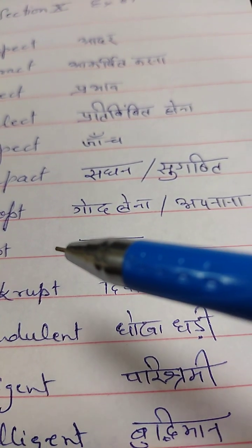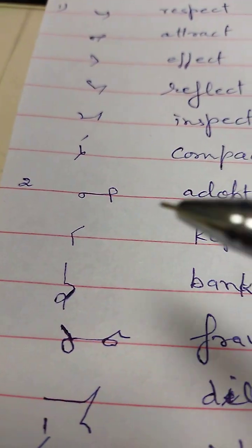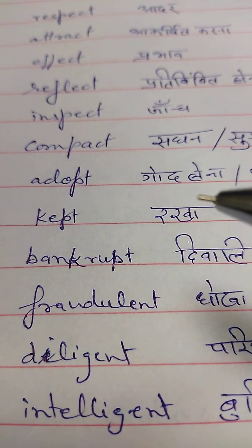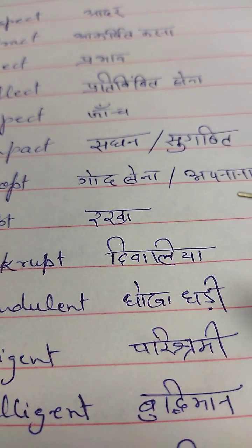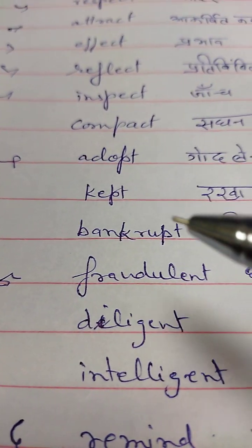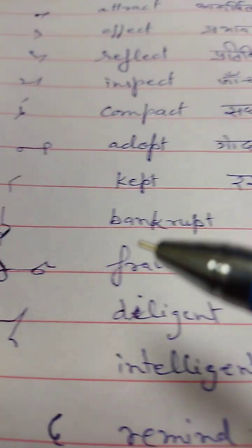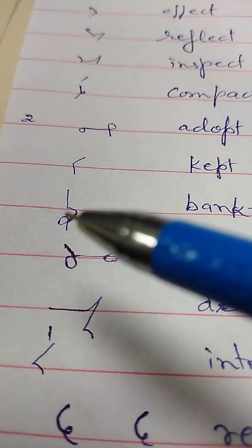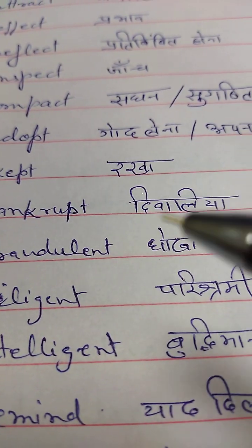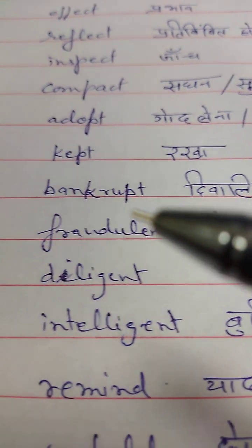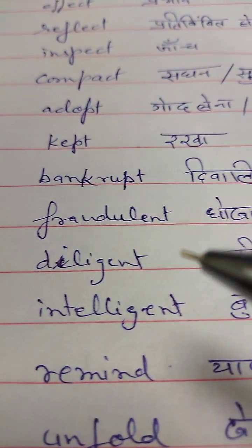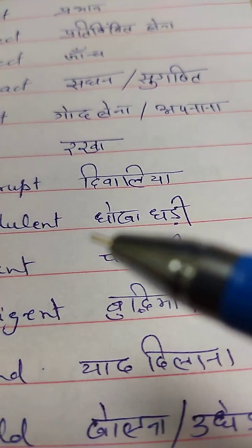Second set: Adopt — godlena, apanana. Kept — rakha hua. Bankrupt — diwaliya. Fraudulent — dhokhadadi.